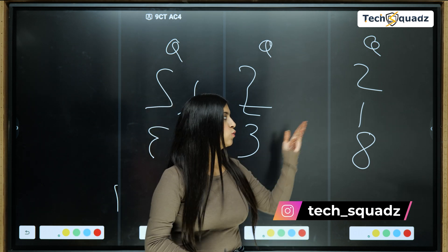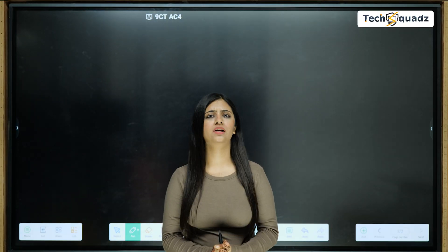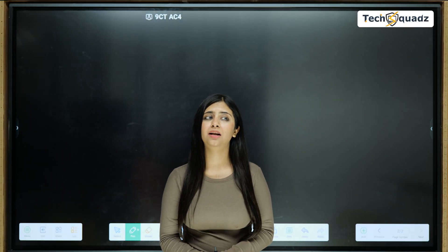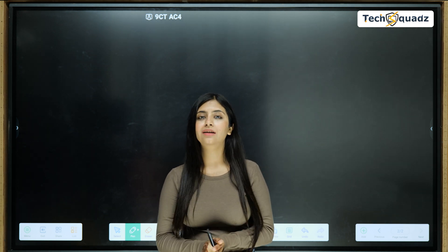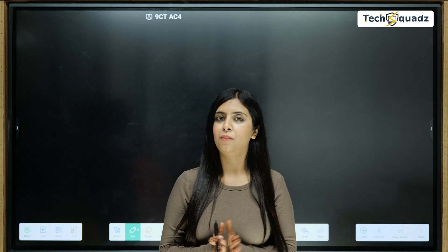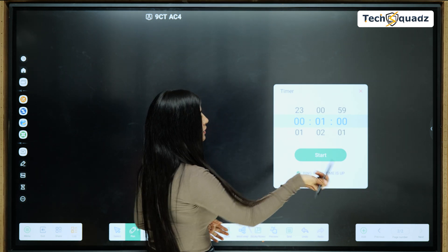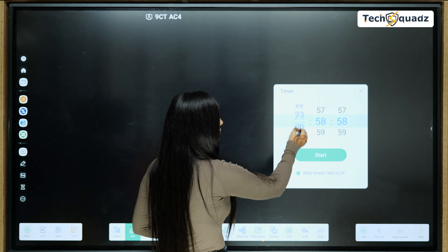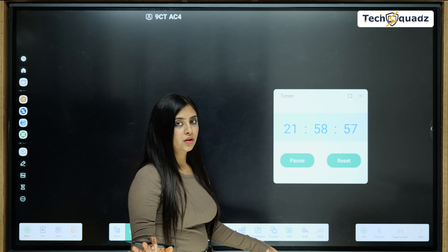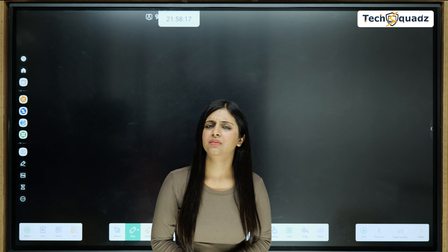Speaking of competitive analysis, a timer is also needed and using mobile phones isn't allowed in the classroom. To minimize mobile phone usage, we have a timer feature built into our smart board. You can set the timer according to your preference — seconds, minutes, hours — and you can reset it or pause it whenever you want. That's pretty progressive!